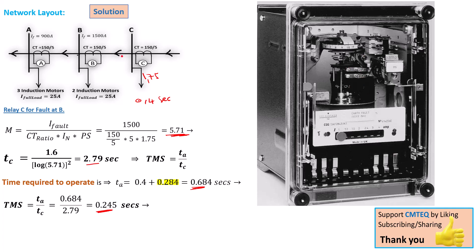Based on our network, we've confirmed two different plug settings. Relay B has its plug set to 125%, and relay C has its plug set to 175%. They are also given different time multiplier settings based on the actual operating times and tripping times we calculated. This allows the disk to turn based on the plug setting and reach the specified time setting for the relay to operate when a fault occurs — while allowing normal load and overload currents to flow without tripping.